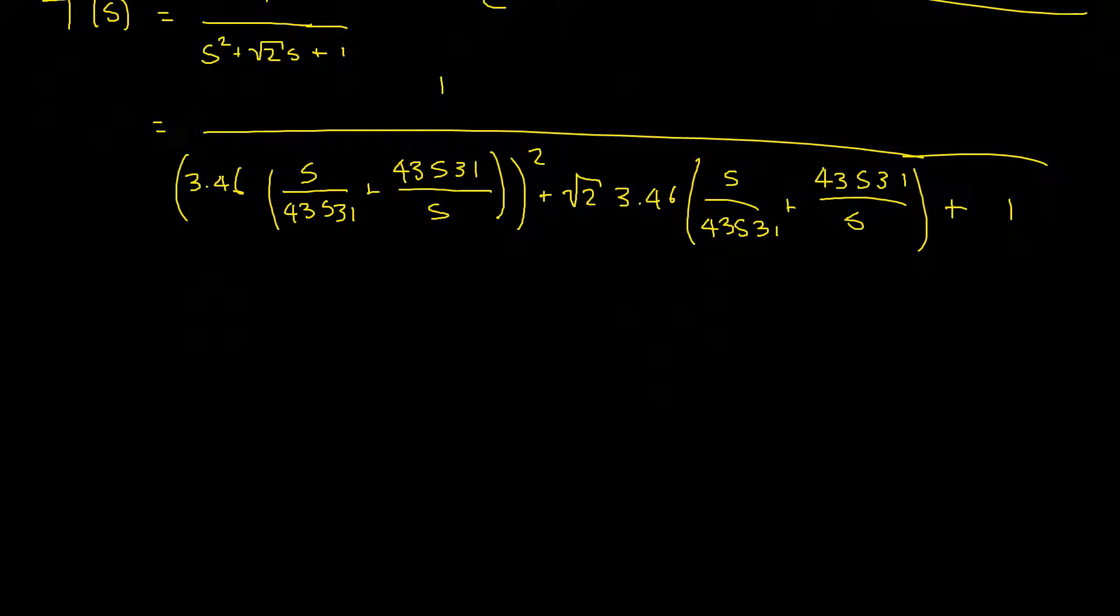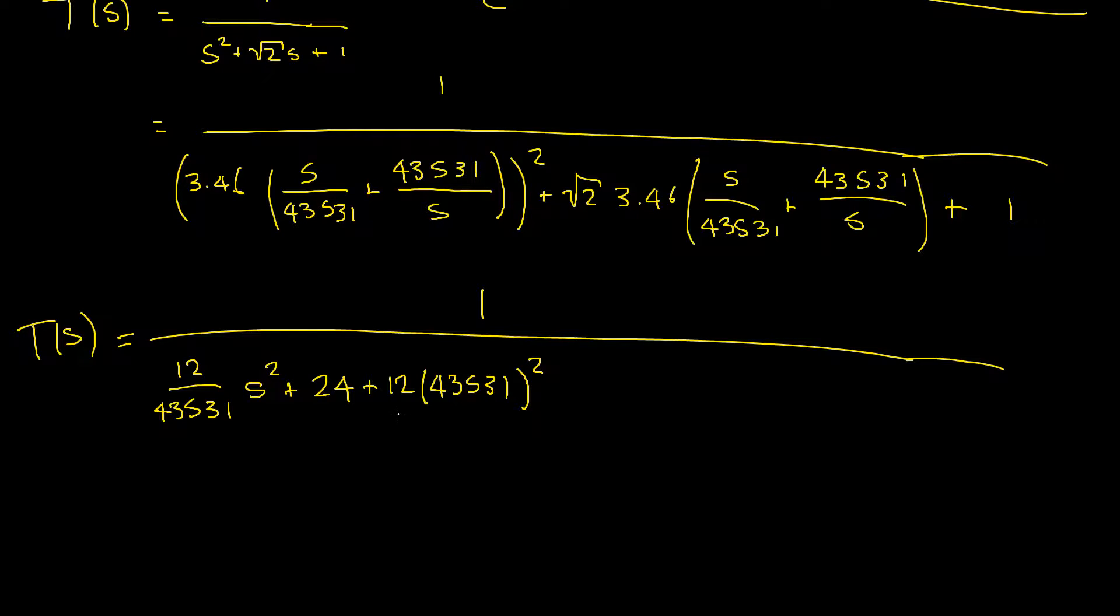The first thing I'd like to do is expand the brackets. So for the squared term, it's essentially just using FOIL. However, I'm probably not going to go through that. It's a little bit ugly for now. So I'll probably just give us the value. So that will give us 1 divided by... Let's give ourselves a lot of space because this one will be pretty long. And remember, this is our new T of S. And that's equal to 12 divided by 43,531 multiplied by S squared plus 24 plus 12 times 43,531 squared divided by S squared. And then all of that is from our original S squared term.